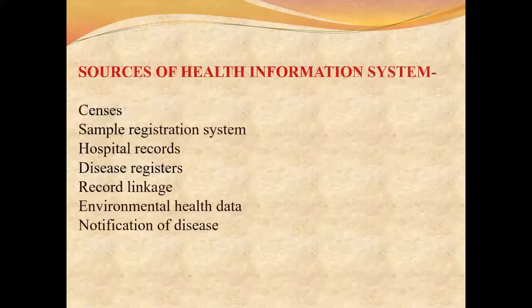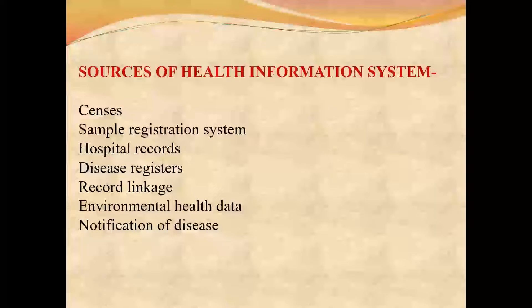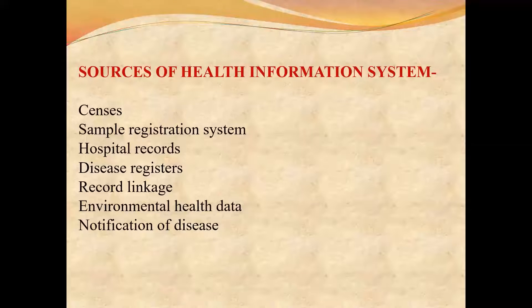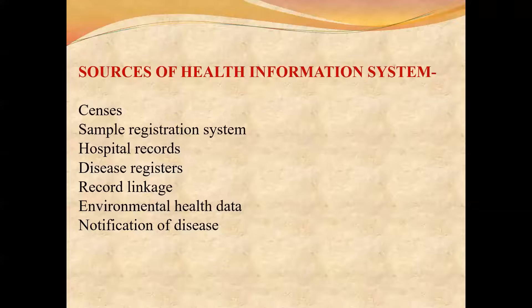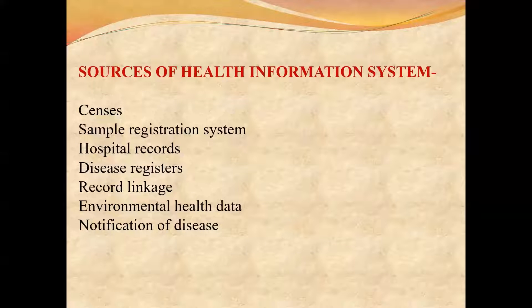Many sources are used to collect health information. These include primary and secondary sources. Secondary sources include census data recorded every five to ten years, hospital monthly audits, sample registration systems, hospital records, disease registers, record linkage, environmental health data, and health notifications. Data collection from these sources helps to easily address problems.